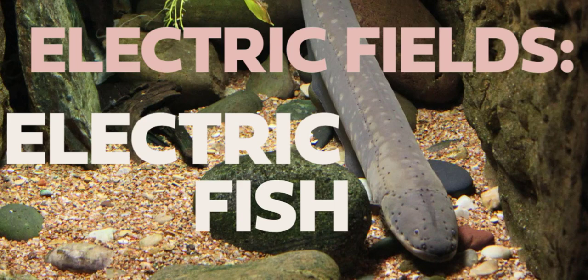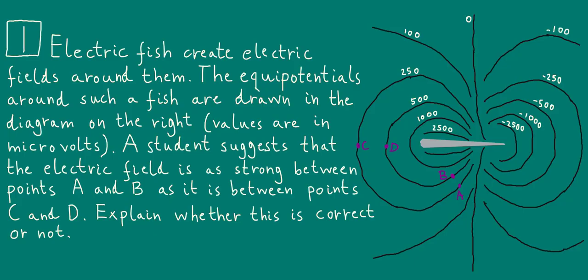So let's take a look at the first question. Electric fish create electric fields around them. The equipotentials around such a fish are drawn in the diagram on the right. Values are in microvolts. A student suggests that the electric field is as strong between points A and B as it is between points C and D. Explain whether this is correct or not. So point A is here, point B is here, point C, point D. And the equipotentials are these black curves here and their values are shown in white here.